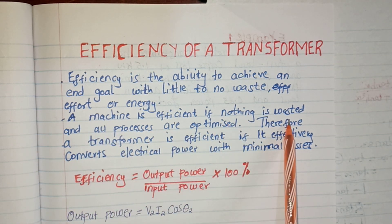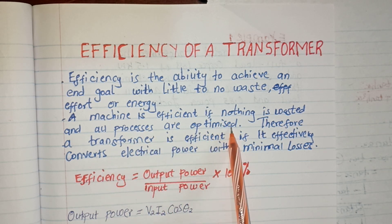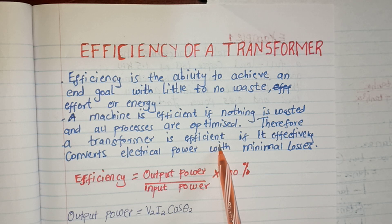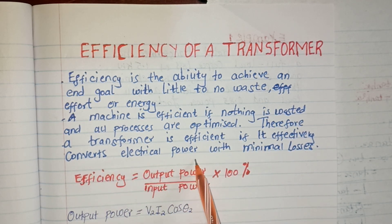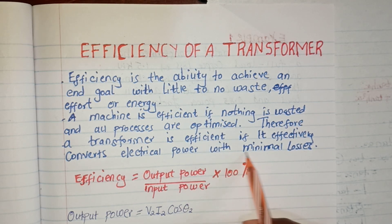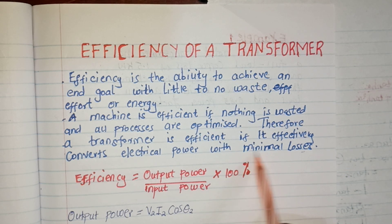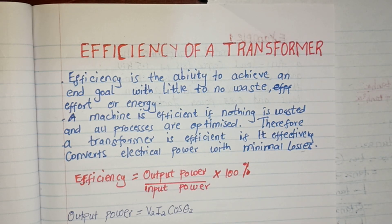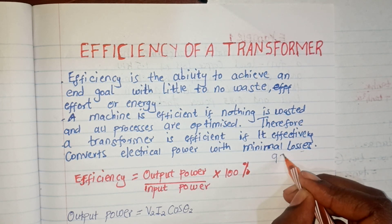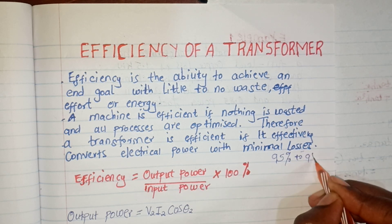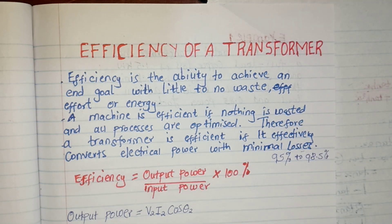A machine is efficient if nothing is wasted and all processes are optimized. Therefore, a transformer is efficient if it effectively converts electrical power with minimal losses. For a transformer to be considered very efficient, it must have minimal losses and operate at high efficiency. The efficiency of a transformer should be between 95% and 98.5%. If it is below that, the transformer is not efficient and is utilizing a lot of power with a lot of losses.